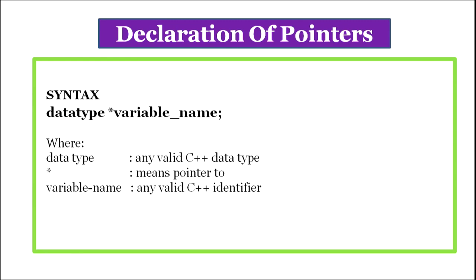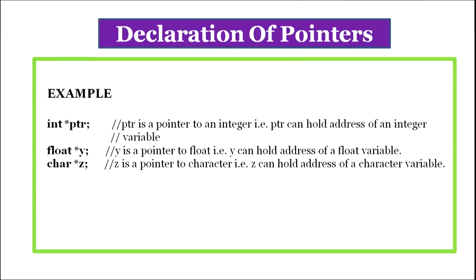Declaration of pointers: The syntax for declaring a pointer is 'data_type* variable_name;' where data type is any valid C++ data type, star means pointer to, and variable name is any valid C++ identifier. For example: 'int* ptr' — PTR is a pointer to an integer that can hold the address of an integer variable. 'float* y' — Y is a pointer to float. 'char* z' — Z is a pointer to a character that can hold the address of a character variable.